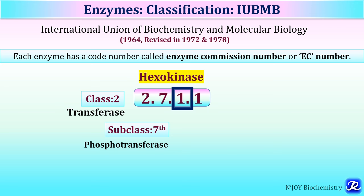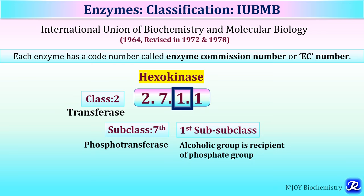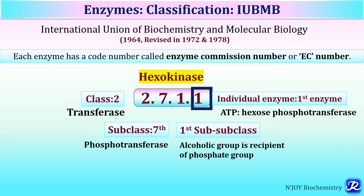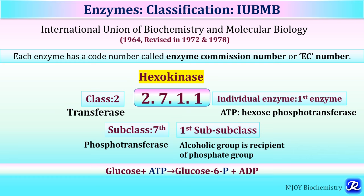The third digit represents the first sub-subclass where the alcoholic group is the recipient of the phosphate group. The last digit, 1, represents the individual enzyme hexokinase, which is ATP:hexose phosphotransferase. Hexokinase catalyzes the glycolysis reaction, transferring phosphate from ATP to glucose to form glucose-6-phosphate and ADP.